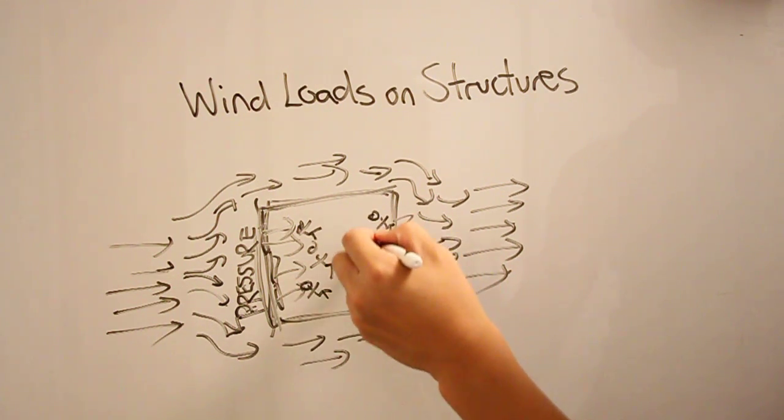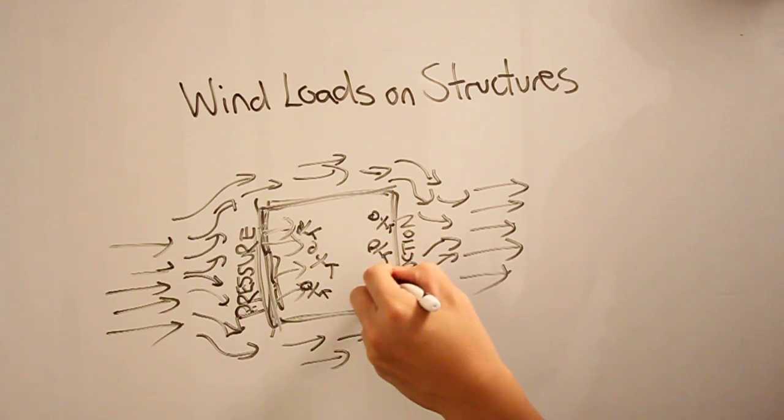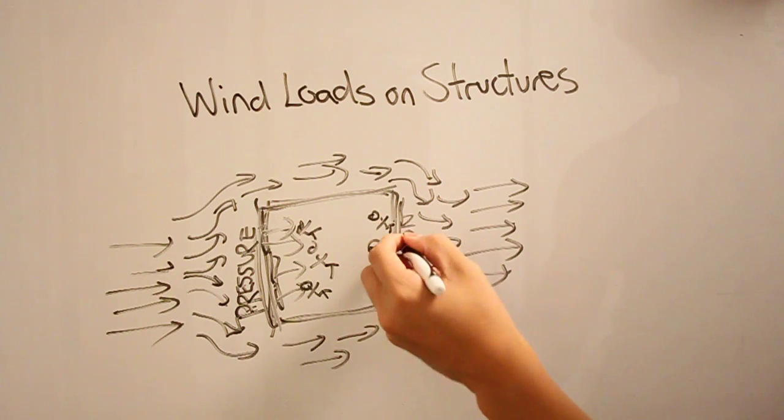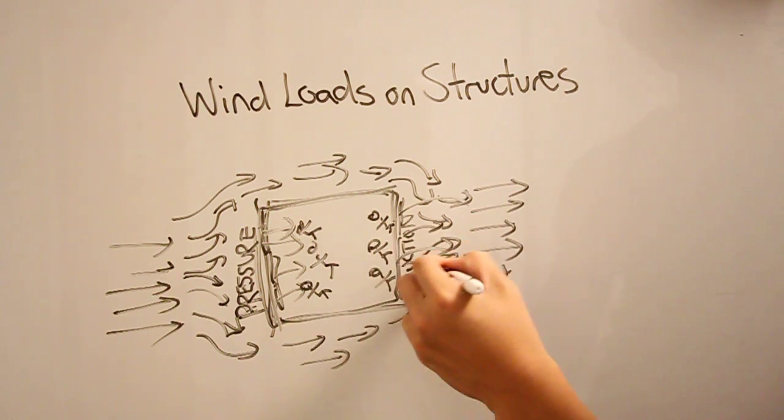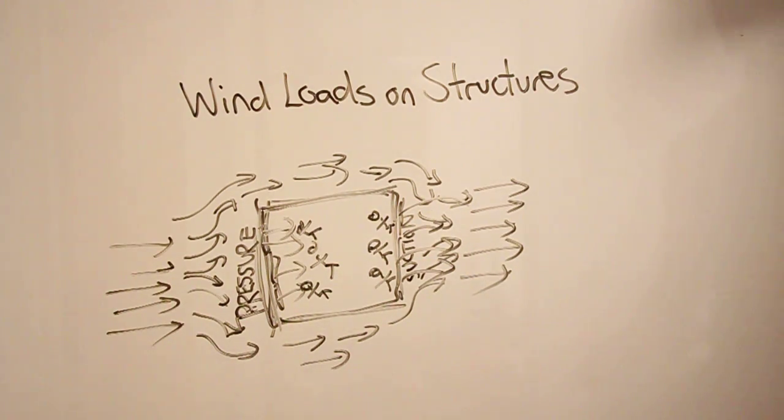But even worse were the guys over here on this side of the building, because their window panes, under almost the exact same force, actually flew out. So there is a really good example of the effect of wind loads on structures.